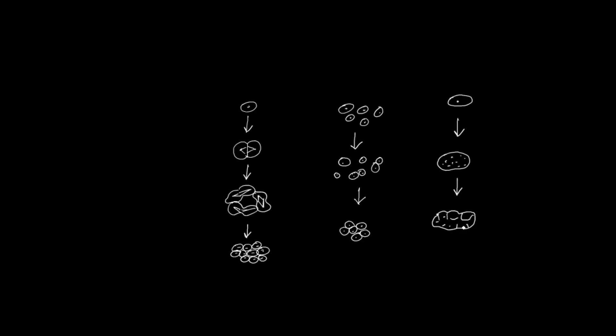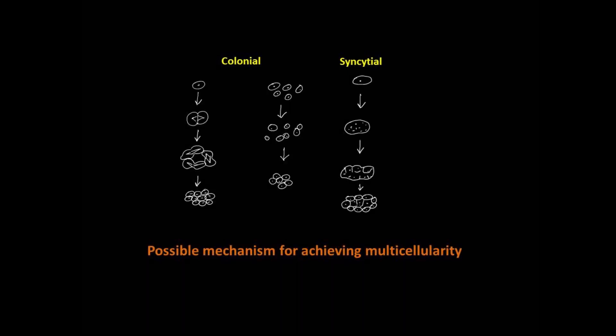The second major possibility is that a single cell became multinucleate without divisions of the cytoplasm, forming a plasmodium organism, and that cell boundaries were established later to give a multicellular animal with many primitively sensitive tissues.